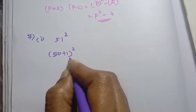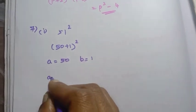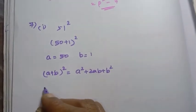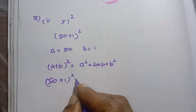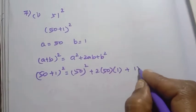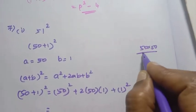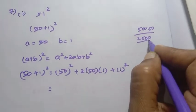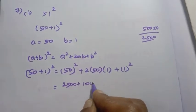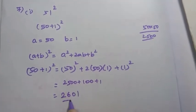What formula do we use? A plus B whole square. That formula is equal to A square plus 2AB plus B square. Here A value is 50 and B value is 1. So 50 plus 1 whole square equals 50 square plus 2 into 50 into 1 plus 1 square. That gives us 2500 plus 100 plus 1.